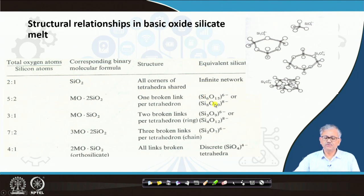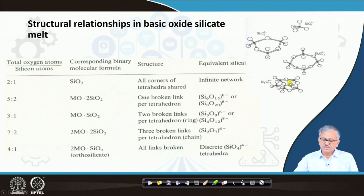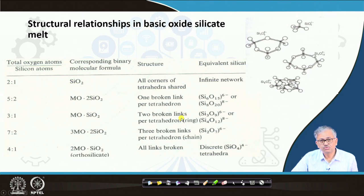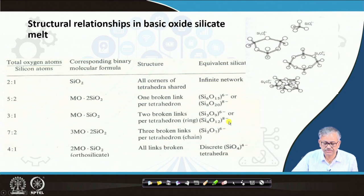With only one bond broken, the anionic complexes prefer to exist in a circular or ring form. This is a very complex circular anionic complex like Si6O15 6- - only one link is broken. If you increase the basic oxide so that the MO:SiO2 ratio is 1:1 (total oxygen to silicon ratio 3:1), two links will be broken - two silica arms will be broken - and you can have anionic complexes like Si3O9 6- or Si4O12 8-.